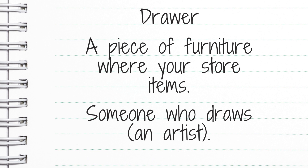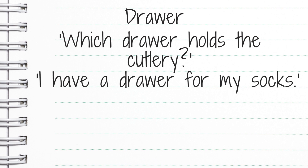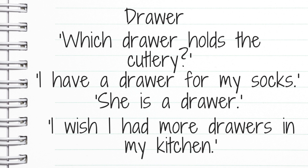Here are some examples: 'Which drawer holds the cutlery?' — referring to that pull-out box piece of furniture. 'I have a drawer for my socks.' 'She is a drawer' — here we're calling her an artist. So 'she is a drawer' means she draws. But when talking about the furniture, it's just 'a drawer.' 'I wish I had more drawers in my kitchen.'